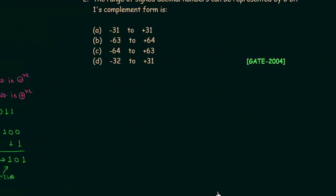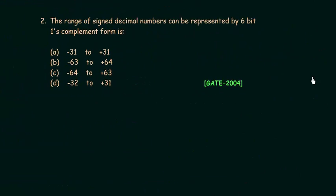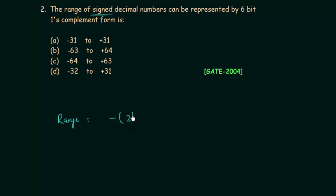Now we move to problem number 2. The question asks for the range of signed decimal numbers that can be represented in 6-bit 1's complement form. This is an easy formula-based problem. The range in case of signed magnitude is minus 2 raised to power n minus 1 minus 1, to plus 2 raised to power n minus 1 minus 1.